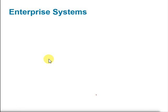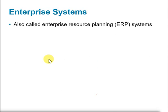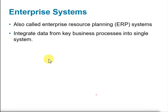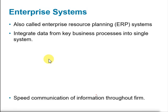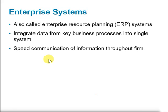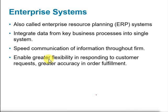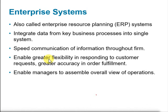Enterprise systems, also called enterprise resource planning (ERP) systems, integrate data from key business processes into one single system that serves all functional areas. They speed communication of information throughout the firm, ensure greater flexibility in responding to customer requests, improve order accuracy and fulfillment, and help managers have an overall view of organizational operations.